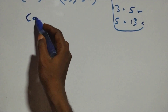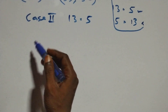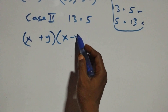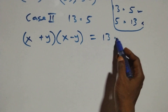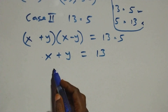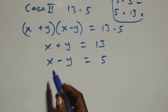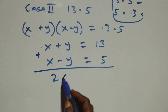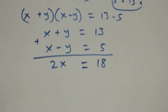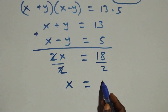For Case 2, which is 13 times 5: we have (x plus y)(x minus y) equals 13 times 5, giving x plus y equals 13 and x minus y equals 5. Adding these simultaneously, 2x equals 13 plus 5, which is 18. Dividing both sides by 2, x equals 9.